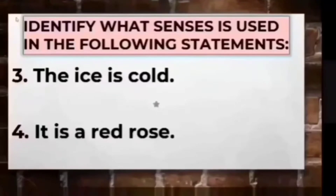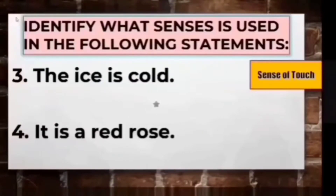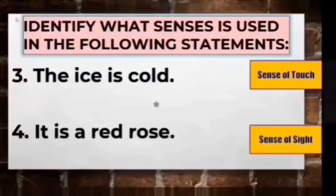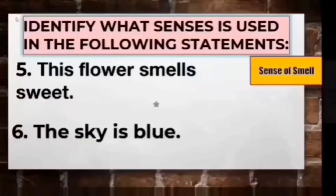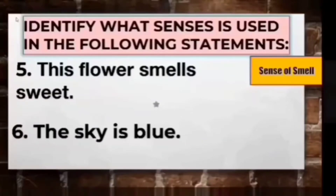Number three: the ice is cold. The word cold describes the temperature of an object, and temperature can be felt by our skin and hands — so the answer is sense of touch. Number four: it is a red rose. The word red is a color that our eyes can see — the answer is sense of sight. Number five: this flower smells sweet. The words smells sweet describe the scent of an object — so the answer is sense of smell. Number six: the sky is blue. Blue is a color that can be seen by our eyes, so it shows an observation using our sense of sight.